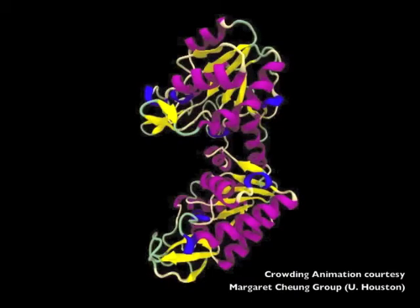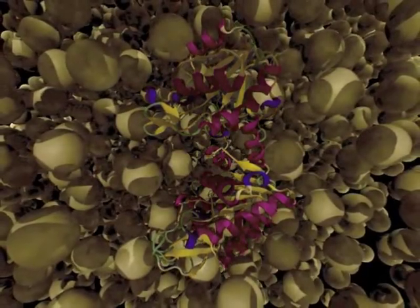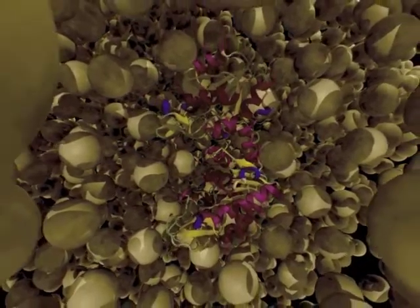This protein PGK, for instance, as you're seeing here, inside a cell is surrounded by a high concentration of crowders, other proteins, RNAs, and so forth.